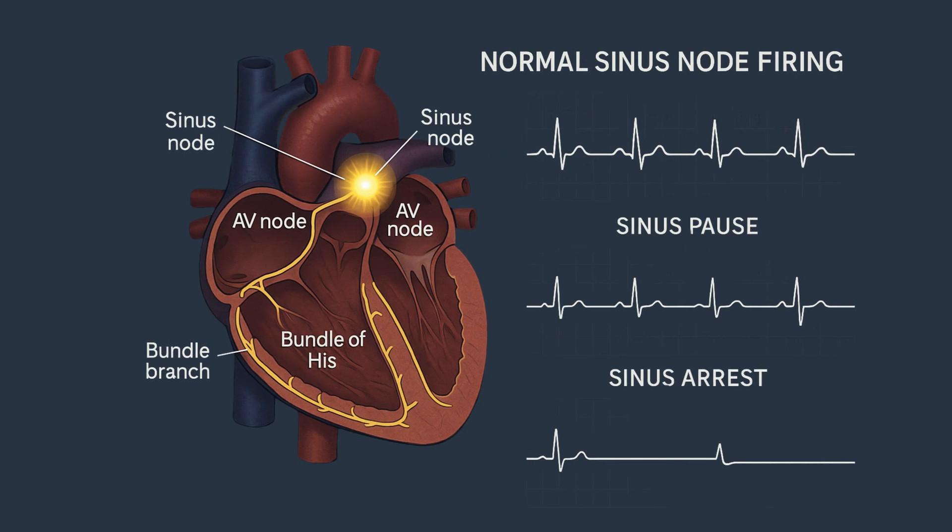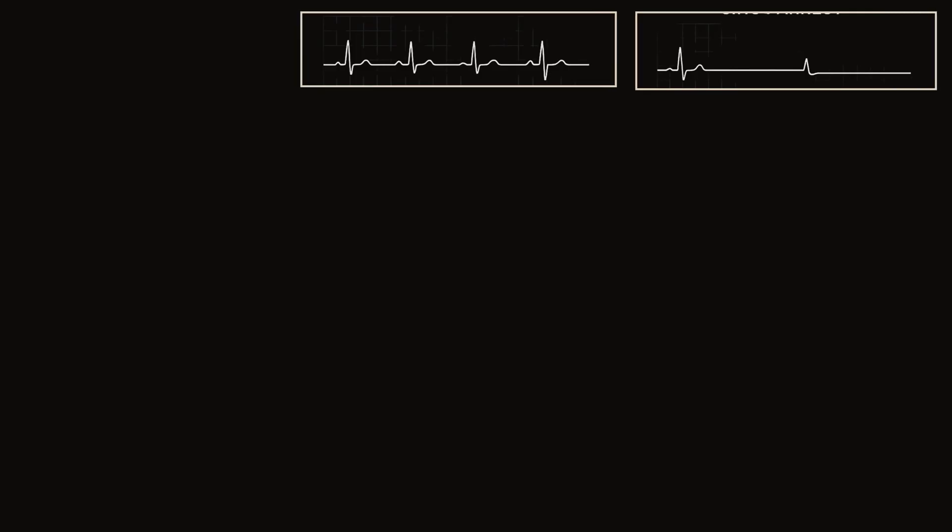So here is what you need to remember. Sinus pause is a short, usually benign failure of the sinus node — the timing is regular, and the rhythm picks up where it left off. Sinus arrest is a longer, unpredictable pause — the timing is irregular, and it may or may not be followed by an escape beat. Both are visible on ECG as gaps in rhythm. Both can be caused by high vagal tone, medications, or underlying heart disease. And both may require a pacemaker if they cause symptoms or risk.